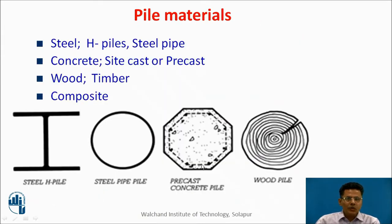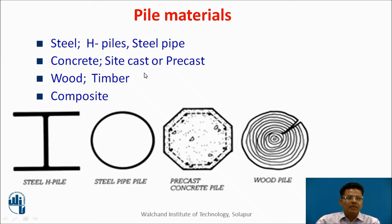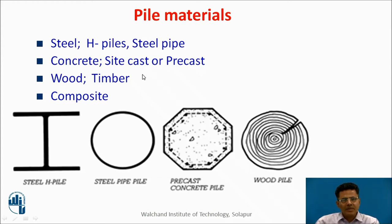What materials are used for piles? The materials can be steel in the form of H-sections, steel pipe sections; concrete piles, either site-cast or precast; wood or timber piles; and piles can also be made up of composite materials.